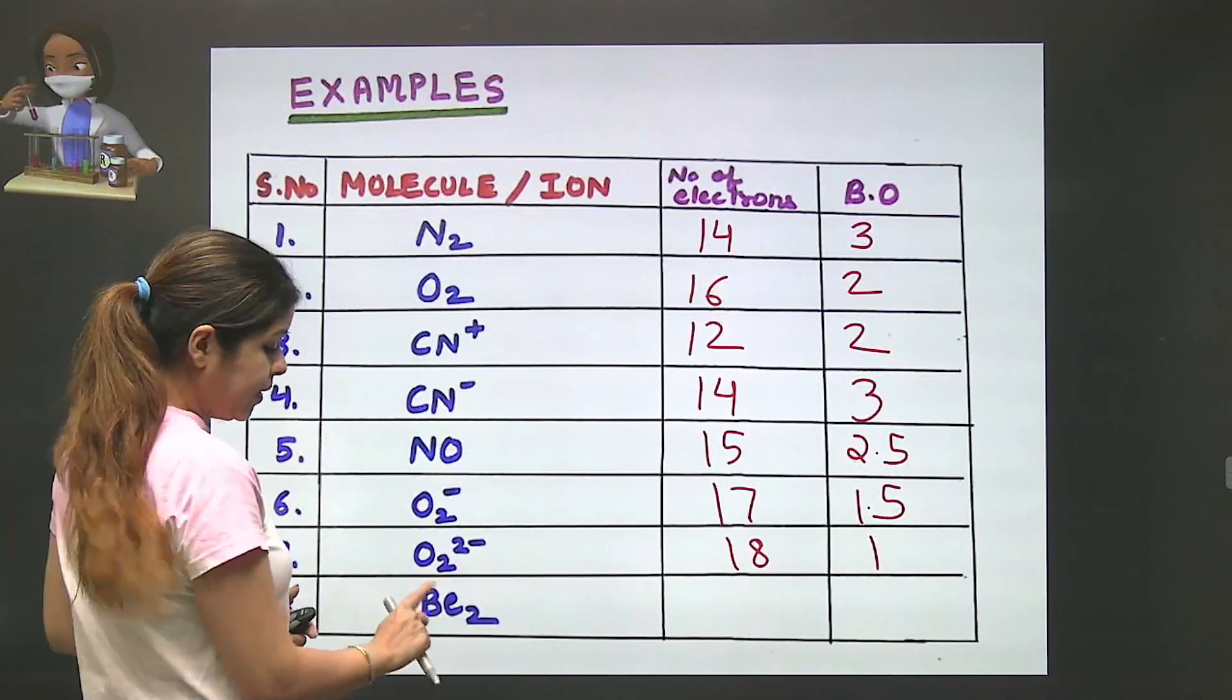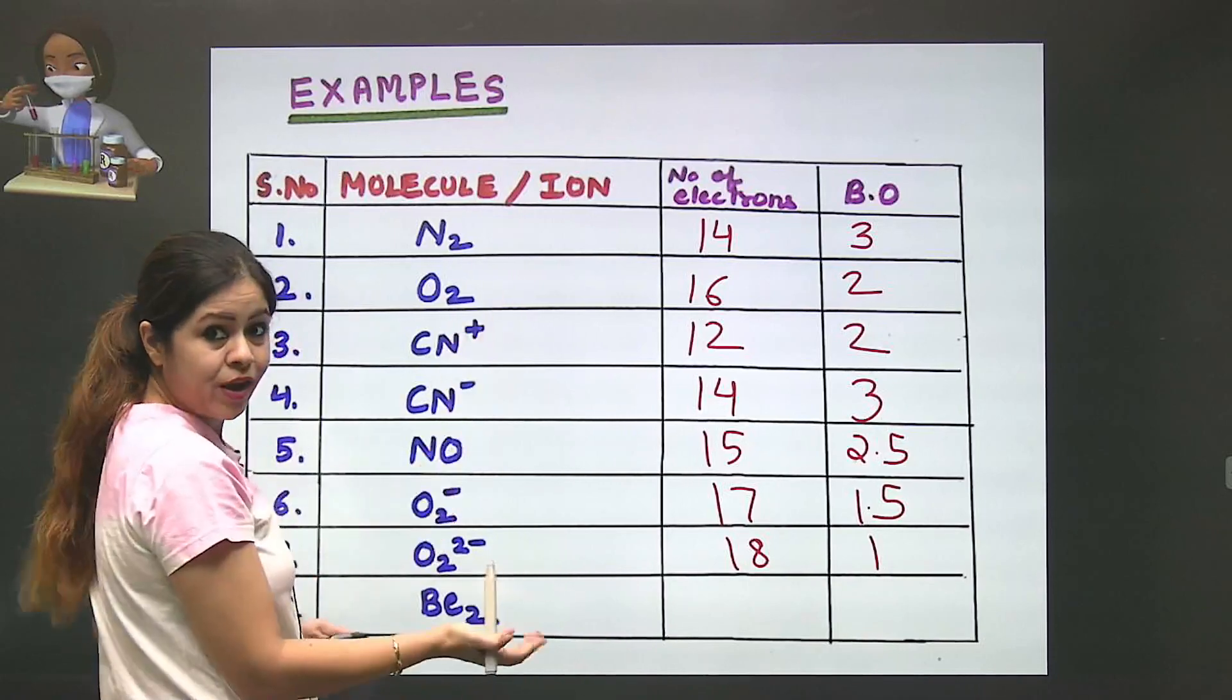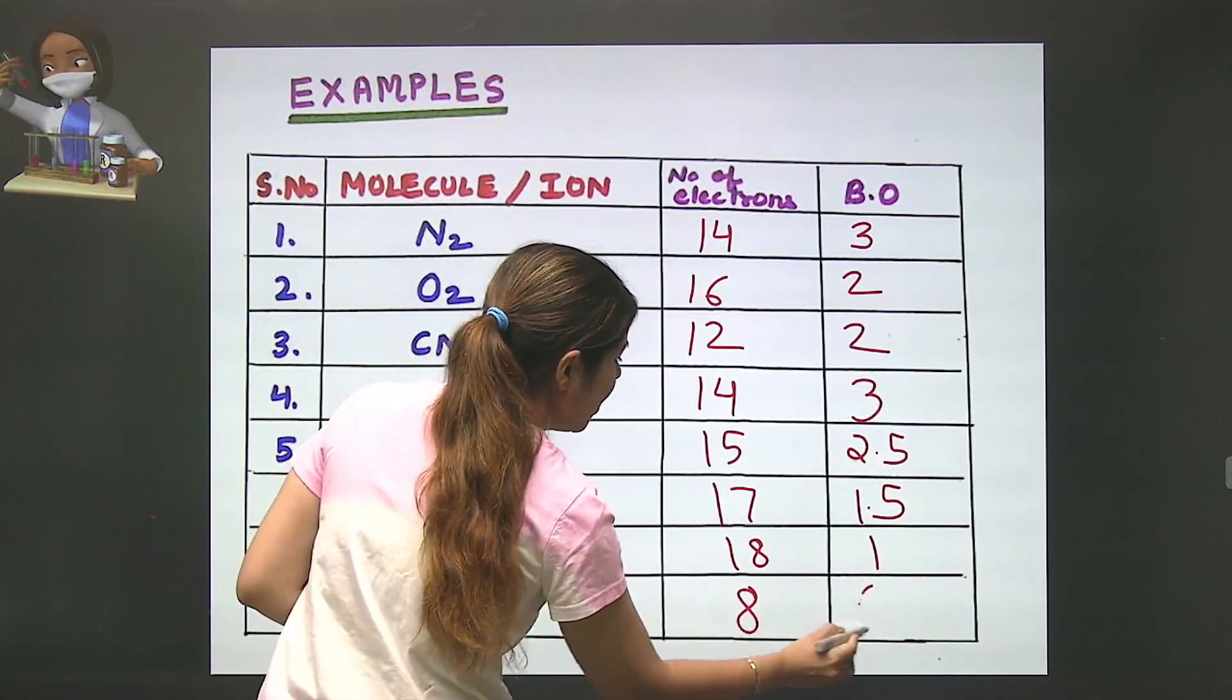Now beryllium. What is beryllium's electron count? 4. So Be2 has 4 and 4, which equals 8 total electrons. For 8, the bond order is 0.